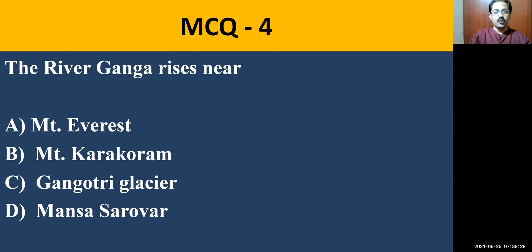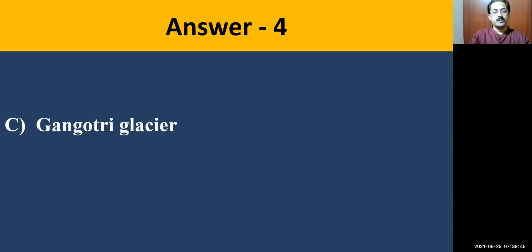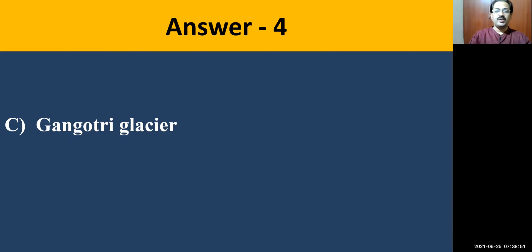MCQ question number four: River Ganga rises near — Mount Everest, Mount Karakoram, Gangotri glacier, or Manasa Sarovara. The answer itself contains the clue — it is Gangotri glacier. Yamuna river takes its birth in Yamunotri glacier, and Ganga river takes its birth in Gangotri glacier.